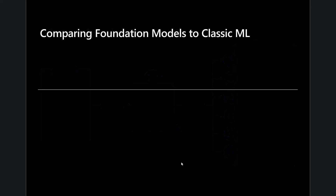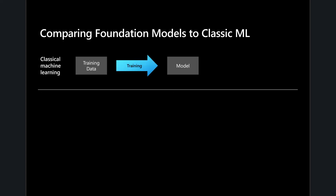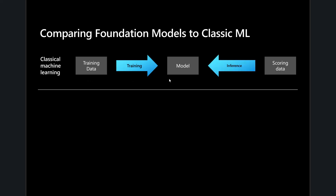A few key things that are a little different compared to classic machine learning. In classic machine learning, it's fairly straightforward: we set up a training data set, train a model, and then use a scoring data set to call the model and get an inference. Somewhat straightforward.